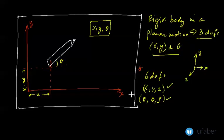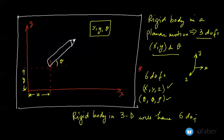This brings us to another conclusion that a rigid body in three dimensions will have six degrees of freedom. So these are two facts that we need to remember. A rigid body in a planar motion will have three DOFs and a rigid body in a 3D space will have six DOFs.